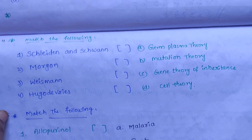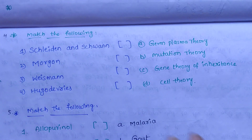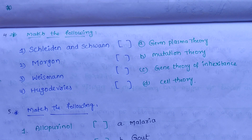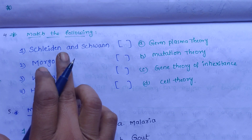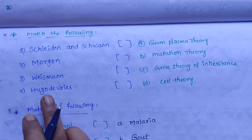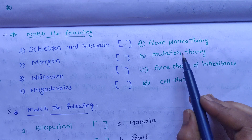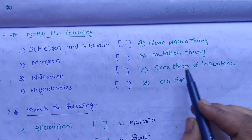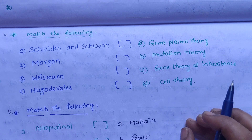The next question is: Match the following. In previous papers, we have had a lot of such questions. Here we have a few scientists' names to match. The scientists are: Schleiden and Schwann, Morgan, Weismann, and Hugo de Vries.